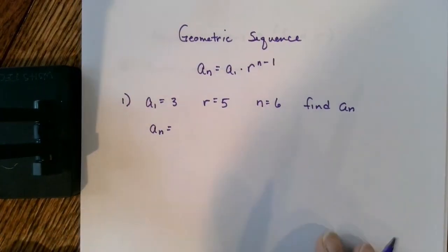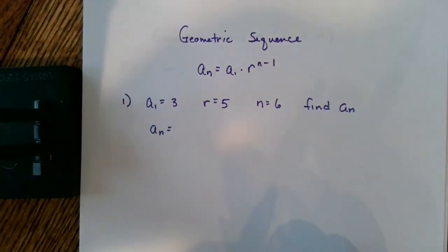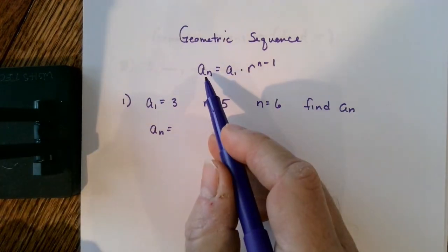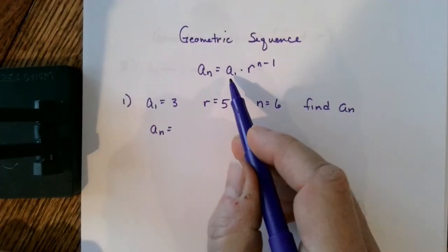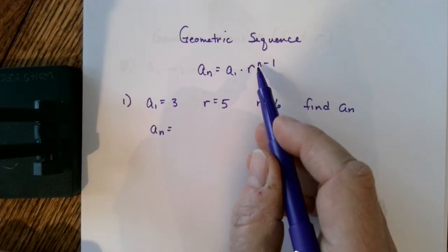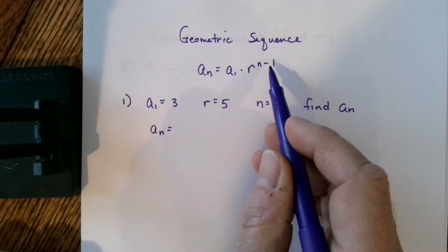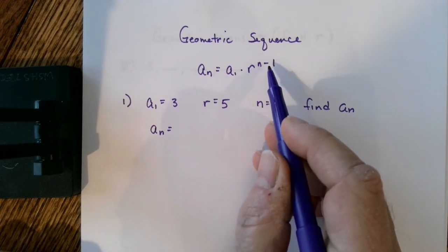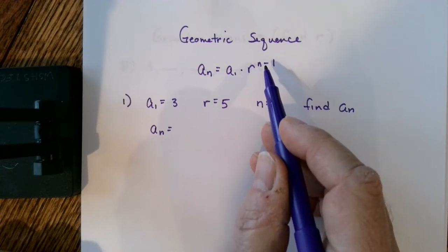Okay, let's take a look at the geometric sequence formula. A sub n, or any term, is equal to the first term times r, which is your common ratio, raised to the n minus 1 power. And let's remember now, n minus 1 is the exponent in this case.